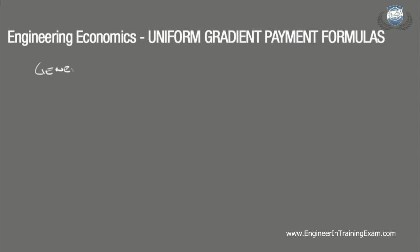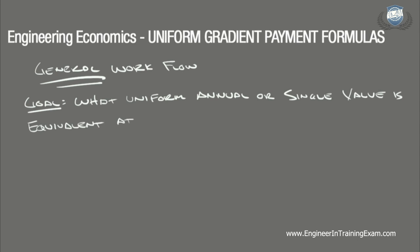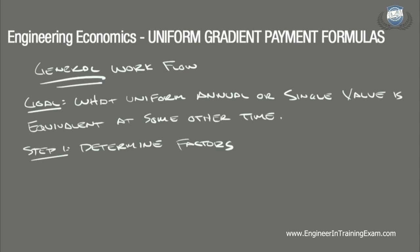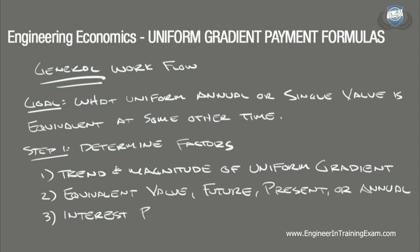All engineering economic analysis is based off compound interest, and for that reason special tables with various pre-calculated conversion factors have been developed. The goal of any uniform gradient series payment problem is to determine what single monetary value or uniform annual value would be equivalent based off specific economic factors. The first step is to determine the factors of importance: the trend and magnitude of the uniform gradient series, the equivalent value to be determined — whether future, present, or annual — the interest rate, and the number of periods.